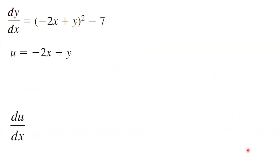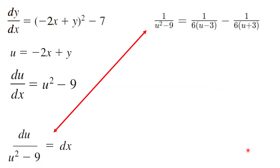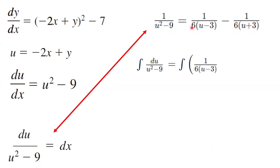Going back to our differential equation and using the partial fractions, 1 over u squared minus 9 equals 1 over 6 times u minus 3, minus 1 over 6 times u plus 3. Taking the integral of both sides, the integral of du divided by u squared minus 9 equals the integral of 1 over 6 times u minus 3, minus the integral of 1 over 6 times u plus 3, all with respect to u.